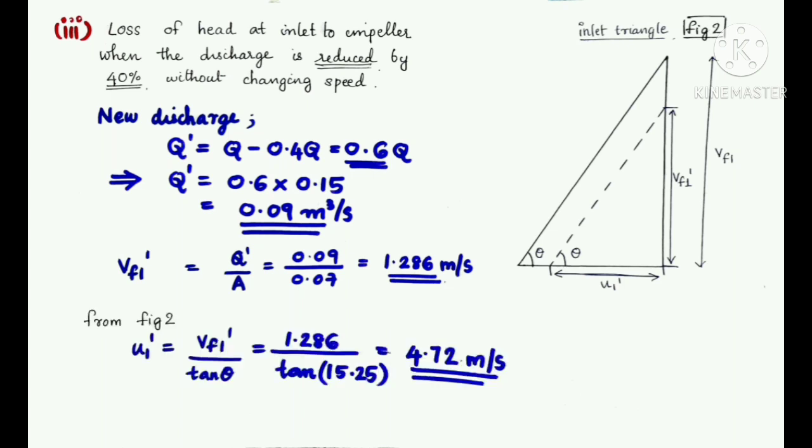From the new inlet triangle, tan θ = Vf1'/U1' from which we can find the value of U1' which is equal to 4.72 m/s.